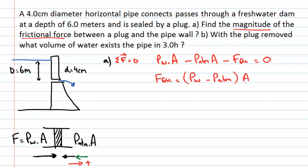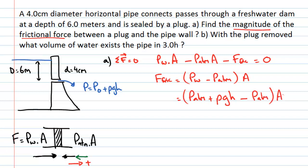The pressure of the water at depth is given by p = p₀ + ρgh, where p₀ is atmospheric pressure. Substituting into our expression, the atmospheric pressure terms cancel out, leaving just the gauge pressure: ρgh times the area. So the frictional force equals ρ × g × h × A.